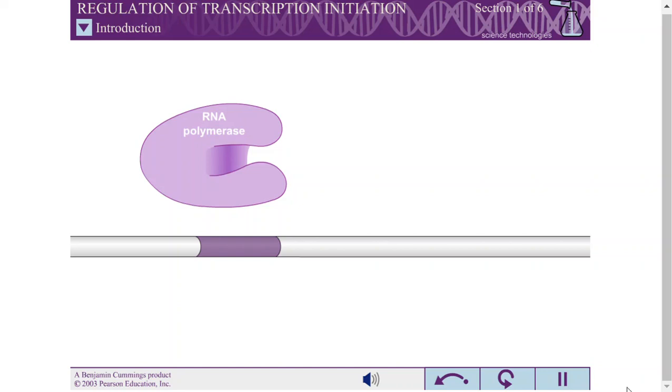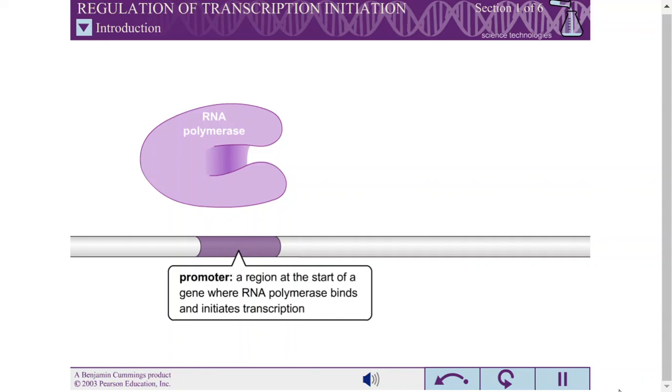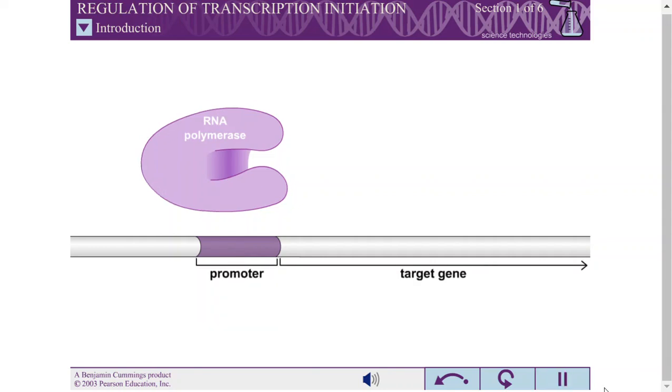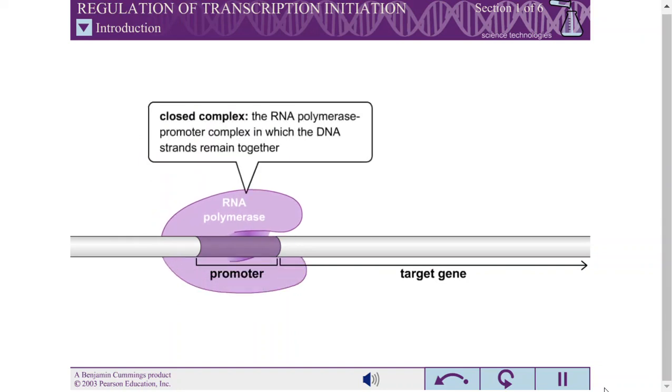Transcription initiation begins when RNA polymerase binds to a region at the start of the target gene called a promoter. The initial RNA polymerase promoter complex is called a closed complex because the DNA strands remain together.